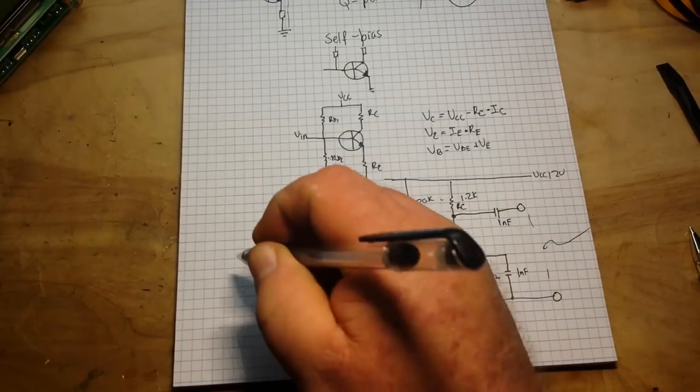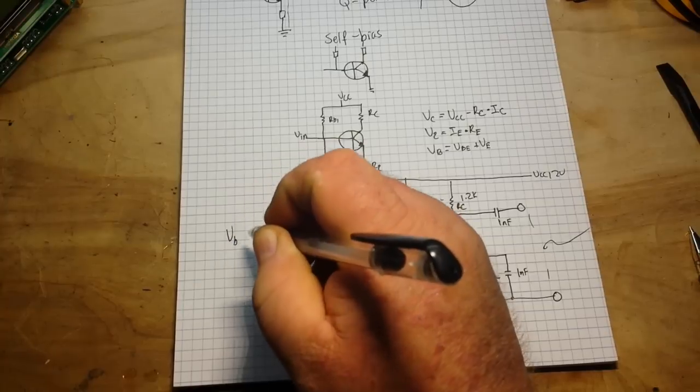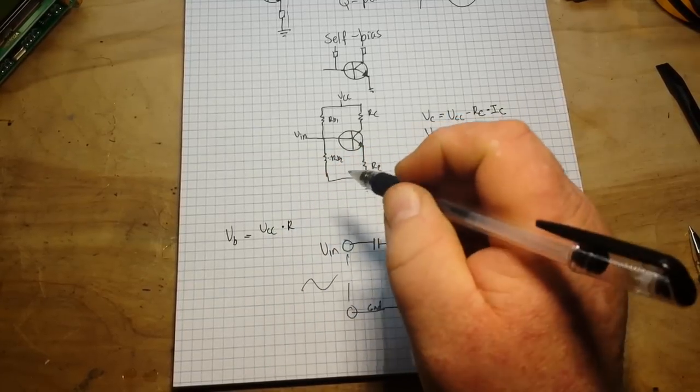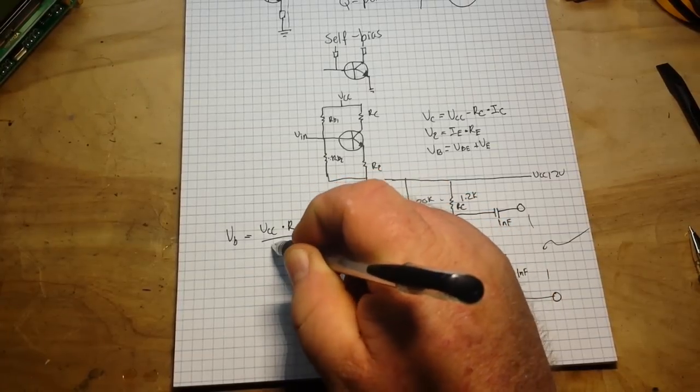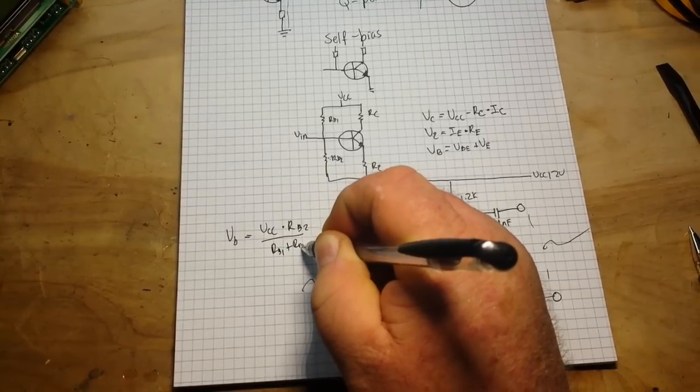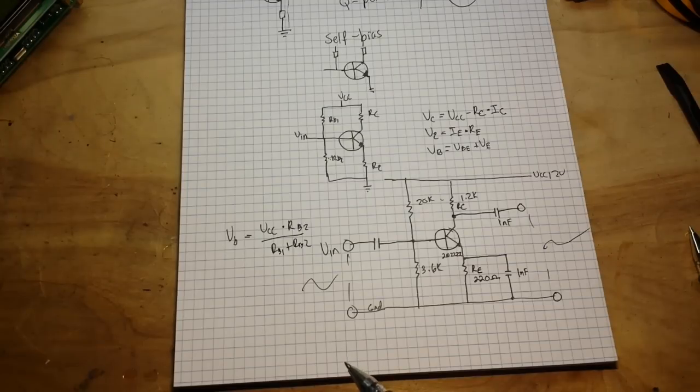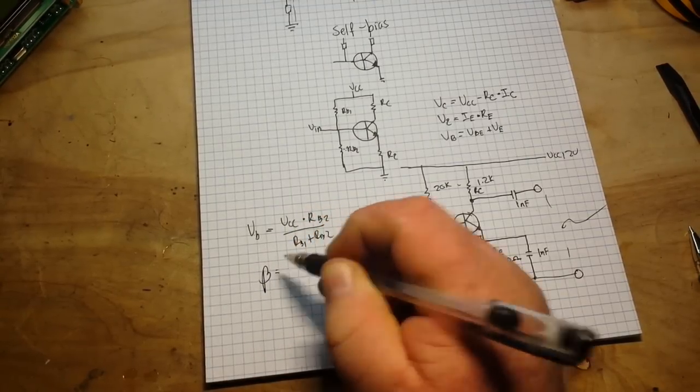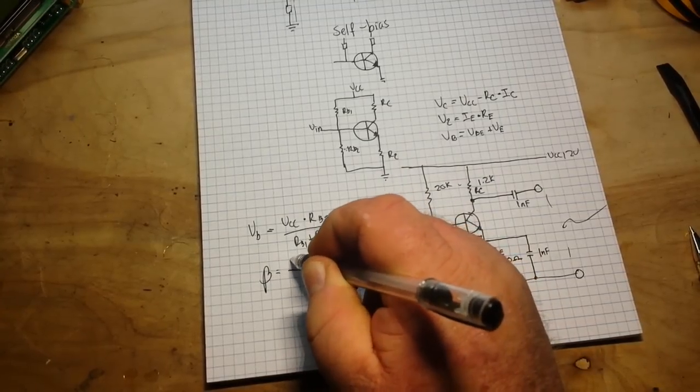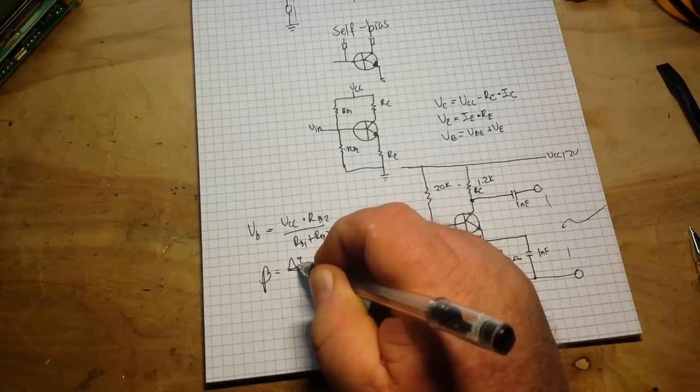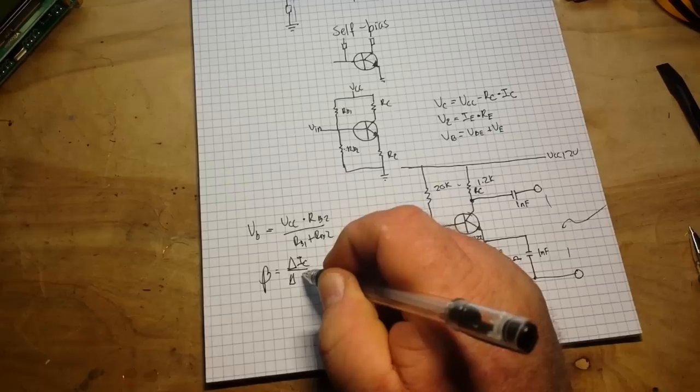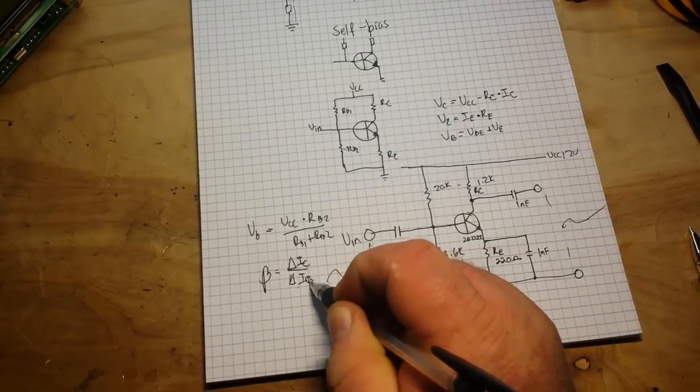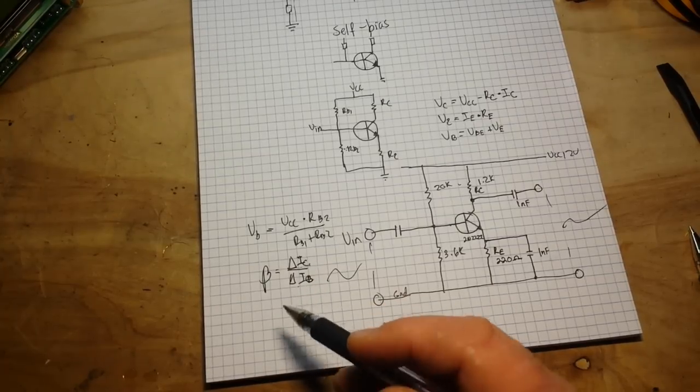So let's figure out our bias voltage, which we'll call V sub little b, as VCC times RB2 over RB1 plus RB2. That will give us our bias voltage. And now we can also find out our beta value for this amplifier with another simple formula. And it is delta IC over delta IB. That is the change in the collector current over the change in the base current.